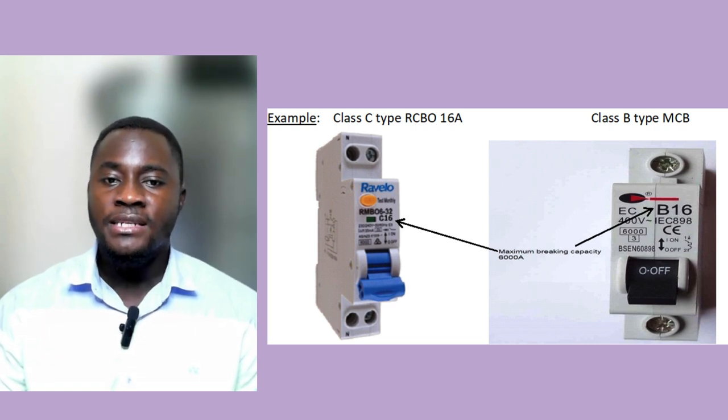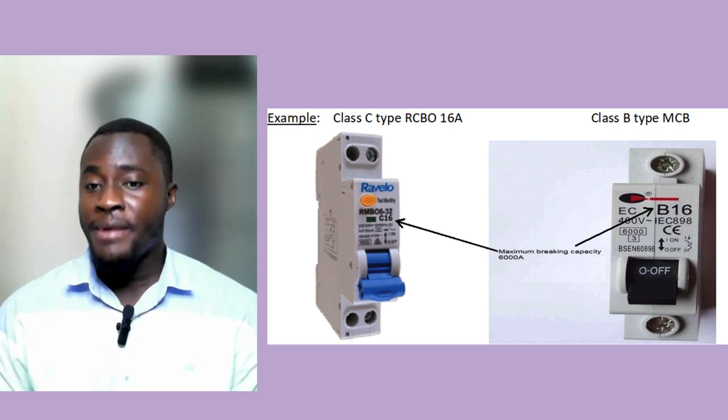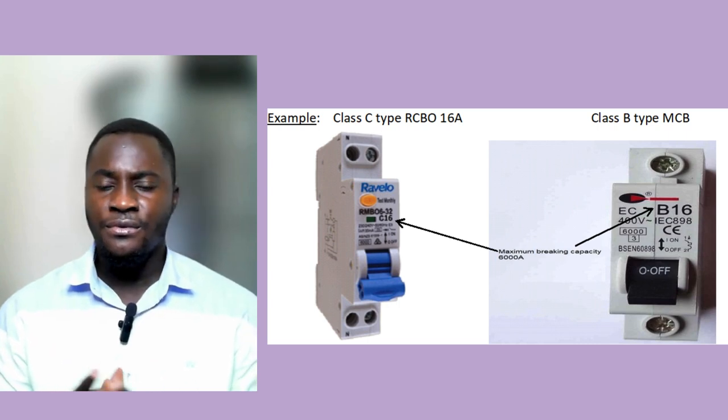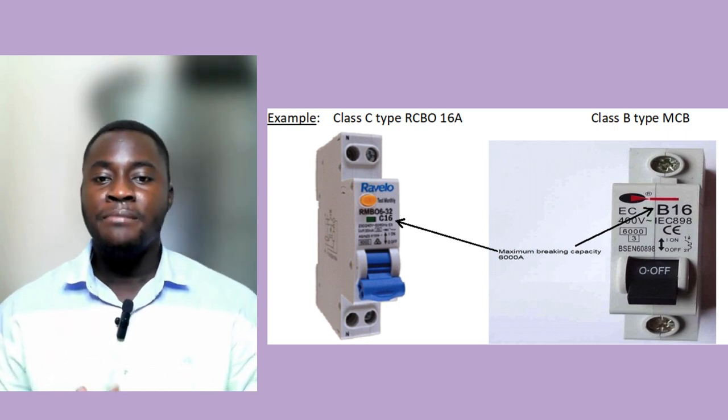If you look at the different circuit protected devices, you will find a maximum braking capacity — for example, 16 amp class C or class B circuit breakers on site may have a maximum braking capacity of 600 amps. When performing the earth fault loop impedance test, we ensure that we carry out this test at the farthest point of the circuit. Please put in the comment section why you feel it should be performed at the farthest point, so that we can discuss it further.